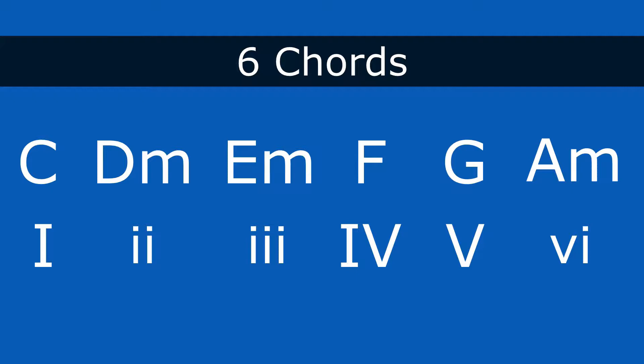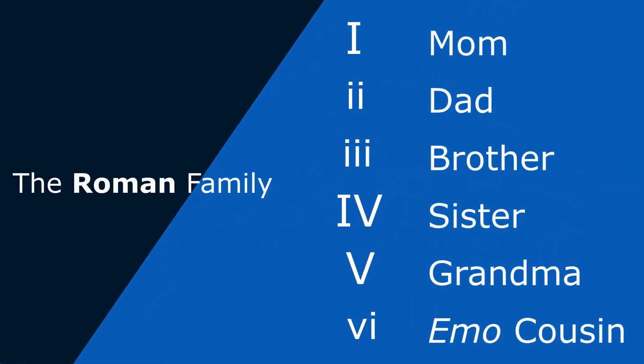So here we have the Roman numerals, and there's a relationship between these — you can look at them as a family. The one chord is mom — kind of happy. Two chord is dad. Three chord is brother. Four chord is sister. Five chord is grandma. And the six chord is the emo cousin — a little sad, a little dark. The diminished chord is that weird uncle you don't even know if he's your uncle, so we'll just stay away from him for now. So really we have six chords: three major and three minor. If you learn those six chords, you're going to be able to play pretty much any song.